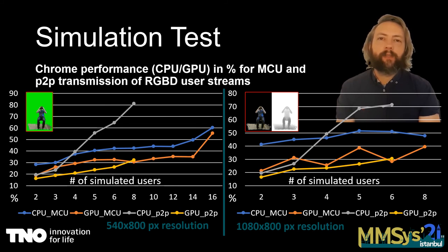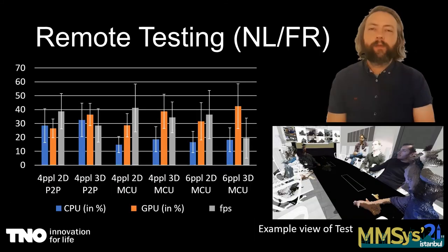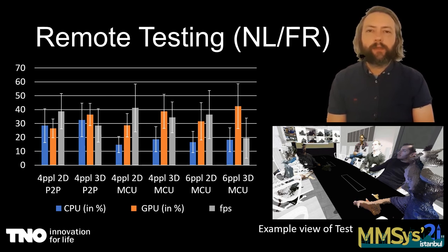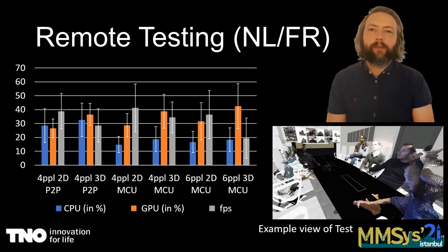Besides simulation, we also executed tests with real users that were geographically distributed. The client performance slightly drops in the 3D scenario compared to 2D — the difference between rendering users as 2D sprites versus 3D volumetric point clouds. As expected, in the peer-to-peer scenario more CPU is used than in the MCU scenario, while GPU load stays roughly the same.